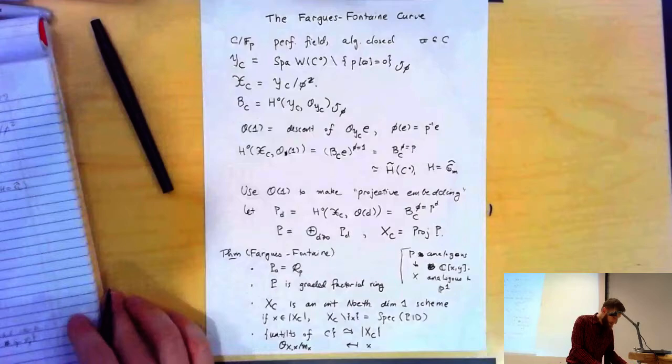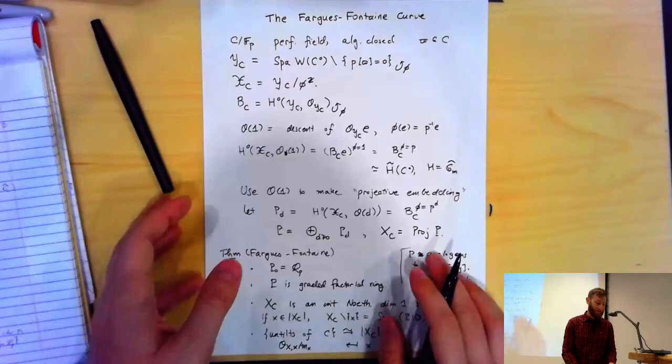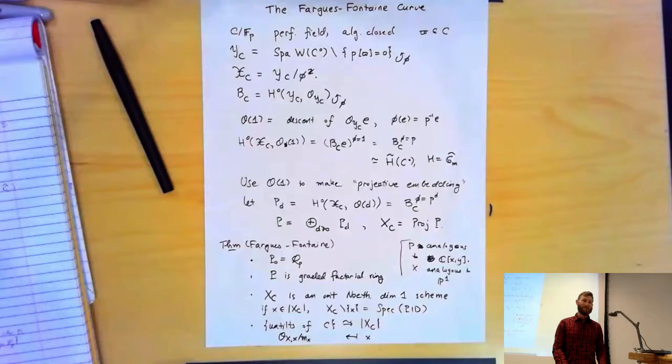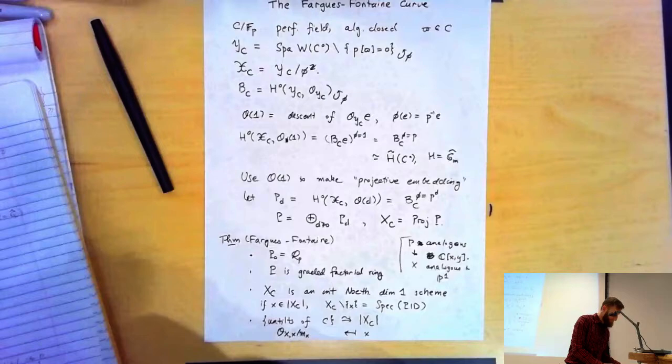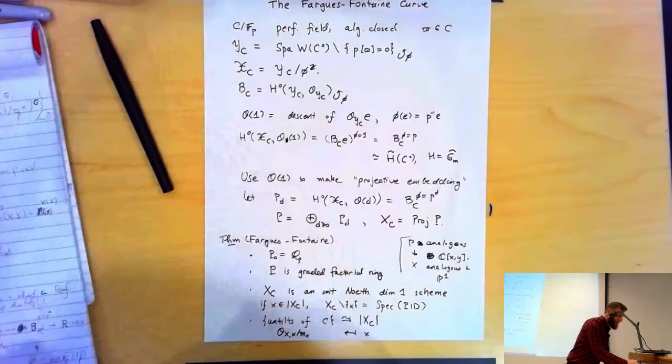This gives a wonderful parametrization of untilts of an algebraically closed perfectoid field of characteristic P in terms of the closed points of a pretty reasonable scheme. So this is going to help us in our search for a moduli space of untilts.